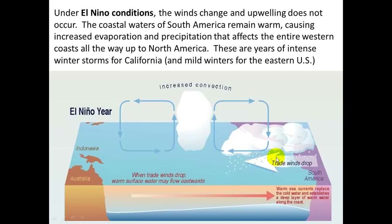Because these trade winds stop or drop, you basically have this warm water hanging around, because normally it gets pushed over towards Indonesia. As it sits around, because it's warm, it causes greater evaporation, which also results in greater precipitation.